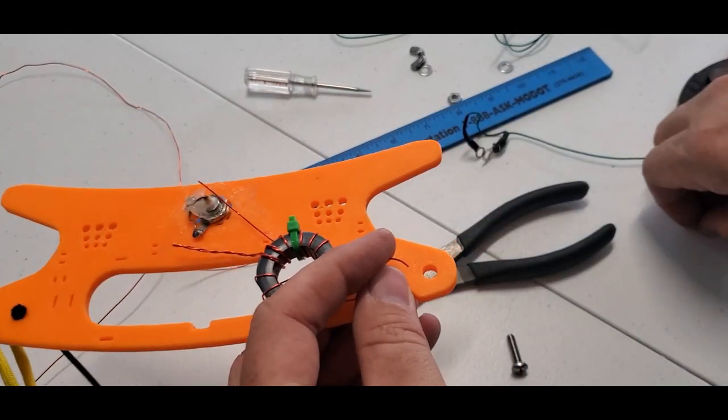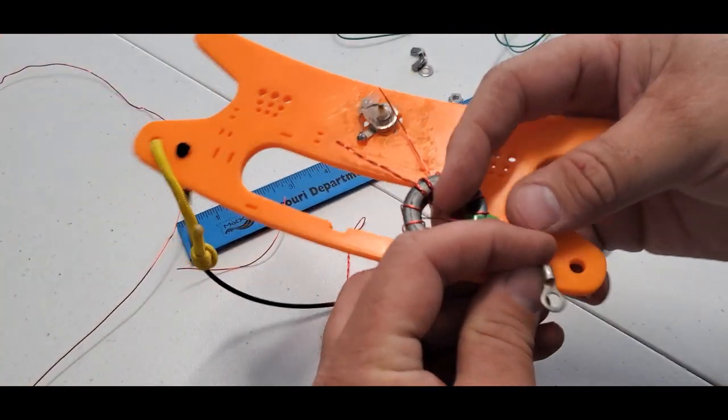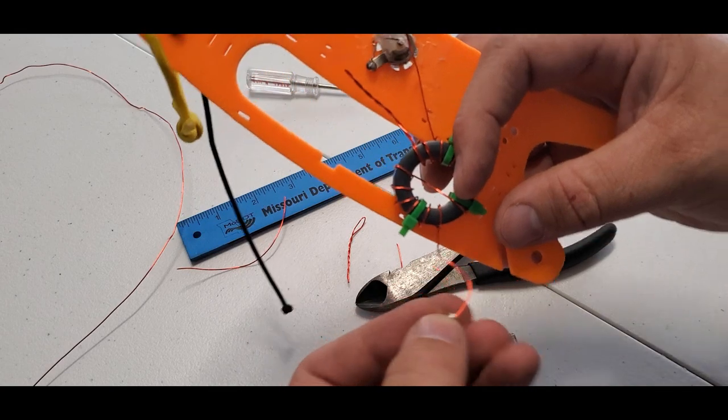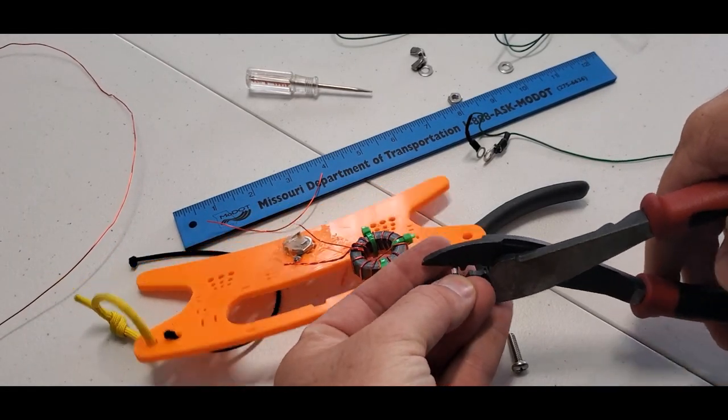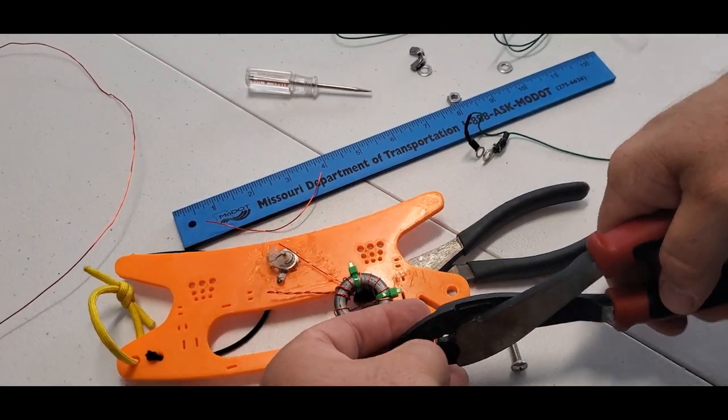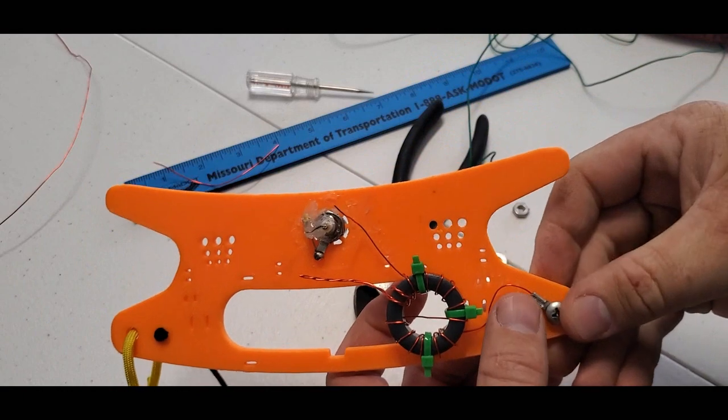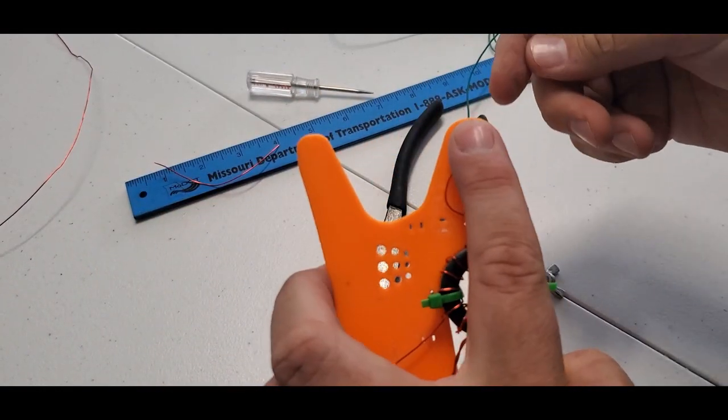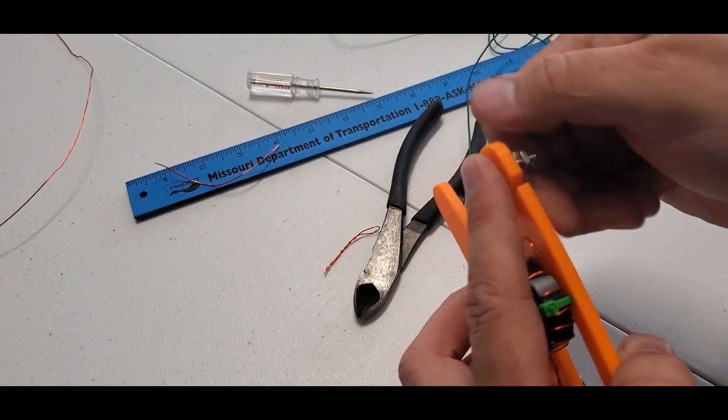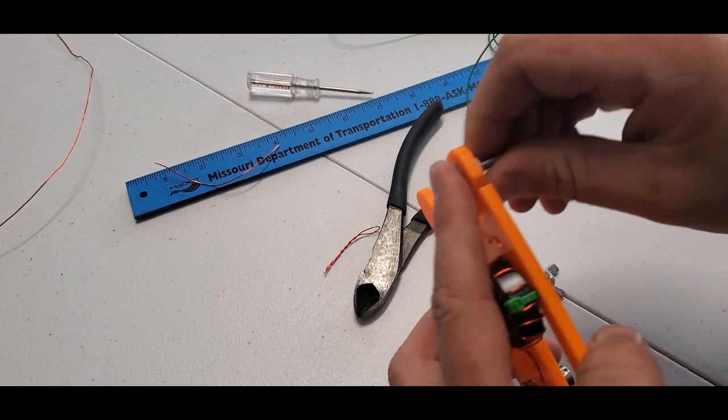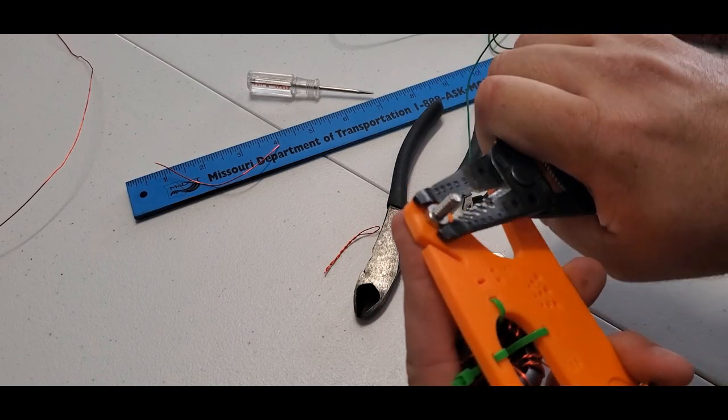This one over here comes with a crimpable end like that. We're going to go ahead and crimp that and then we'll put that one on the screw. Once we get this crimped on there, you can go ahead and put the screw in it, hold it in place, flip it over. At this point, we're going to put a screw on so that this doesn't come out and we're just going to tighten this down so it's not going to go anywhere.